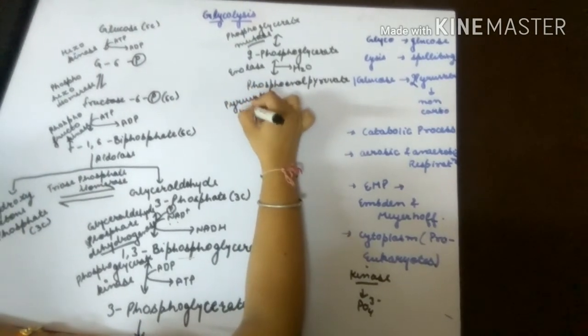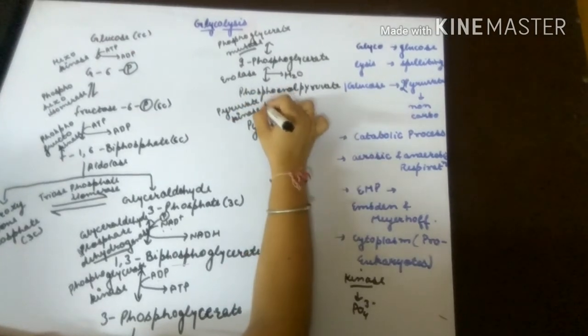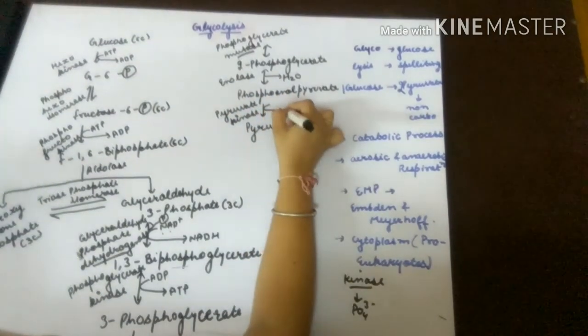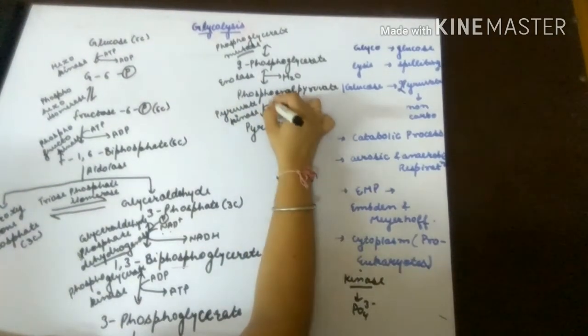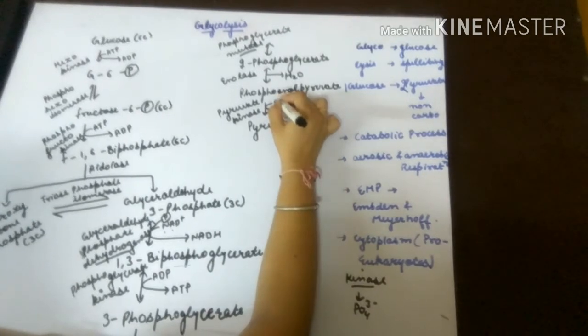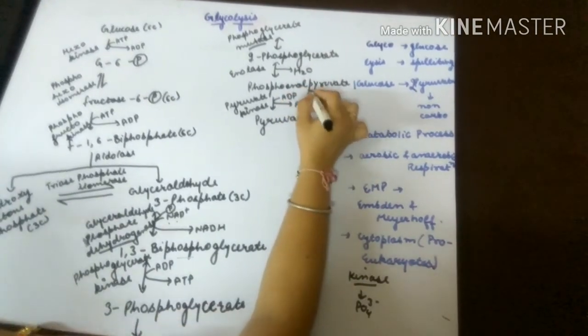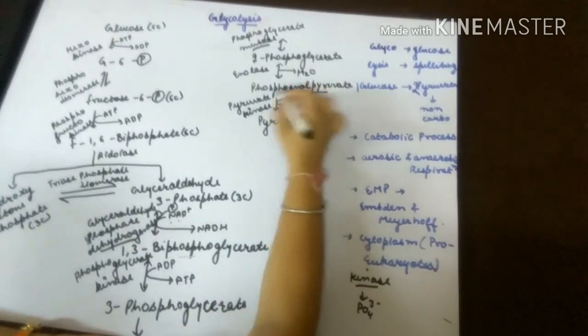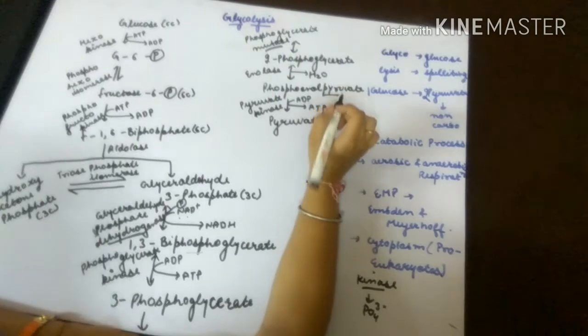As the last step, phosphoenolpyruvate is converted into a pyruvate molecule with the help of enzyme pyruvate kinase. Here again kinase is used, so an ATP molecule is being formed from ADP, in which the phosphate is given by the phosphoenolpyruvate.